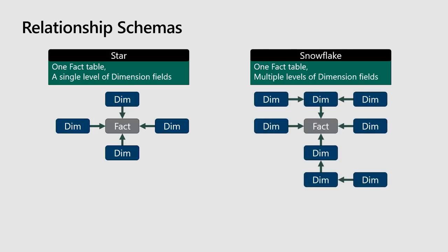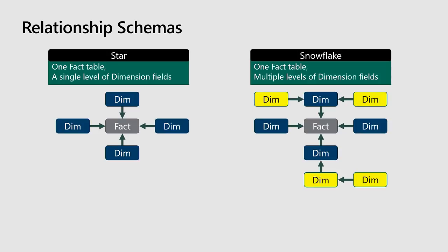As soon as you get past one level, you move into what we call a snowflake. This is where you have one fact table and multiple levels of dimensional fields. Why is it called a snowflake? Because if you look at a snowflake under a microscope, every single one is unique with lots of branches going all over the place. Ideally, this is not what we want to see. If we flatten these things down — we know there's a one-to-many relationship between all these tables — we could actually get back to the star schema, which is ideal.